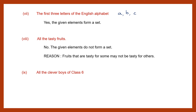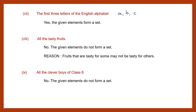Question 9: all the clever boys of class 6. Now how do we define that? It's not well defined. Suppose we say all the children who get above 90 percent or all the children who get above 80 percent — then it is very well defined. Otherwise, we do not know the definition of clever boys when we speak about it generally. So no, the given elements do not form a set. The reason is the definition of cleverness is not well defined.